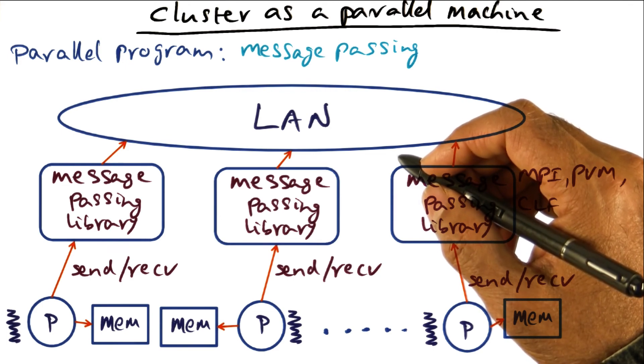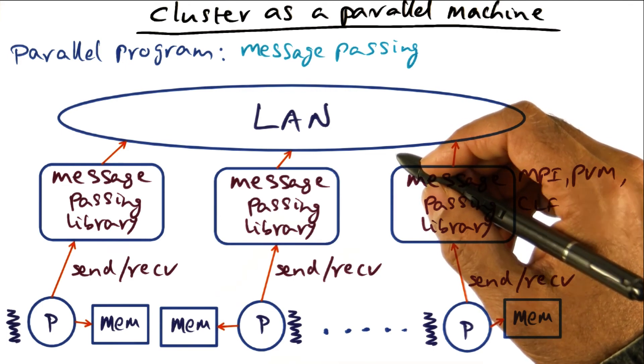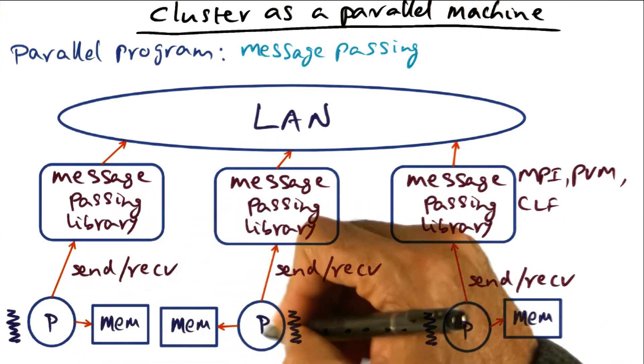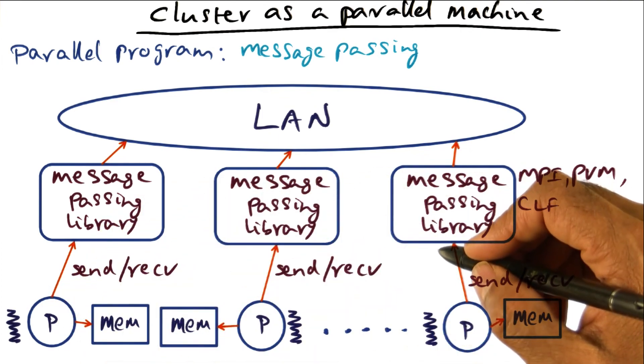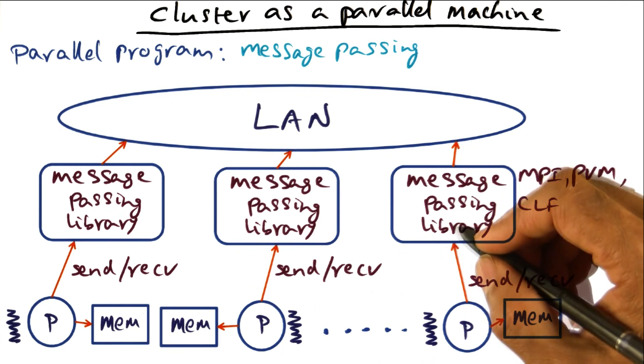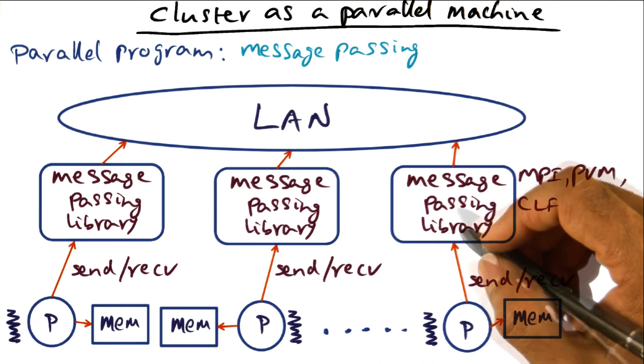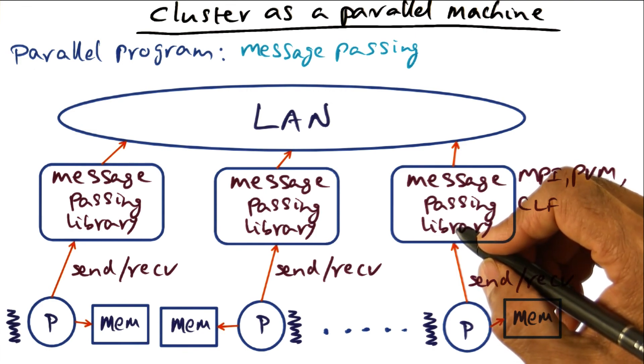On the other hand, if the programmer has to think in terms of coordinating their activities on different processes by explicitly sending and receiving messages from their peers, that is calling for a fairly radical change of thinking in terms of how to structure a program.